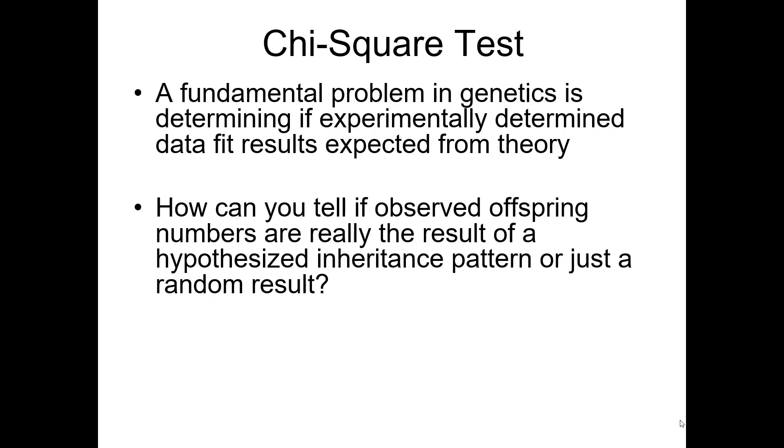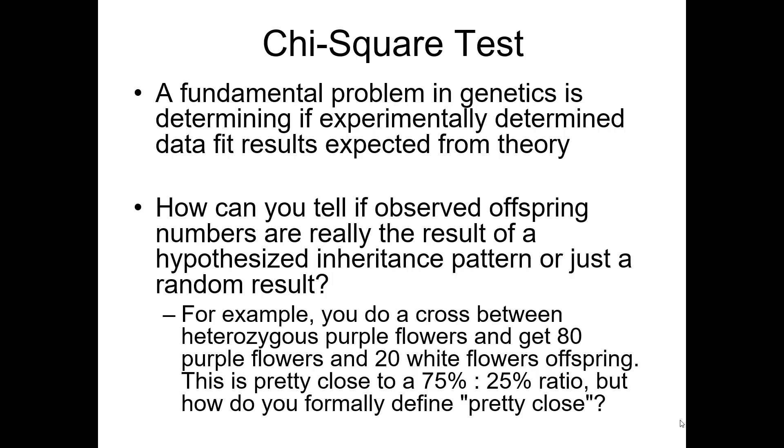How can you tell if observed offspring numbers are really the results of your hypothesized inheritance pattern or just some random result? Say for example you do a cross between heterozygous individuals, in this example purple flowers.